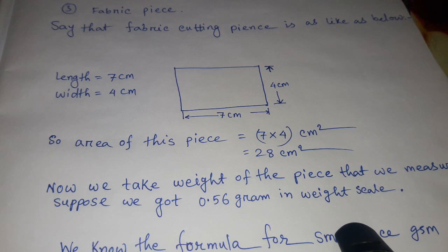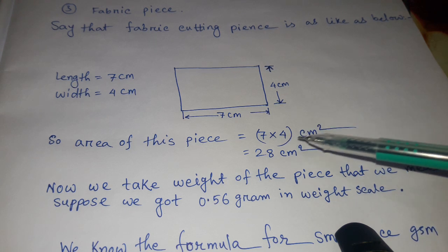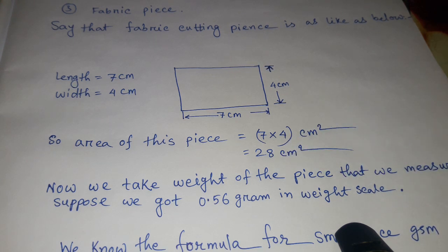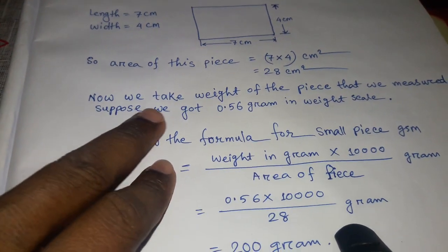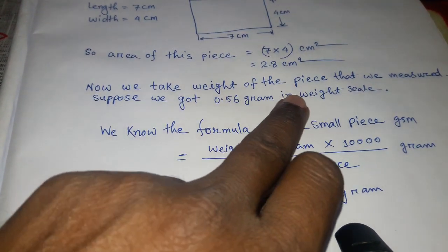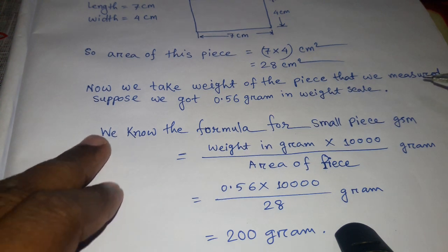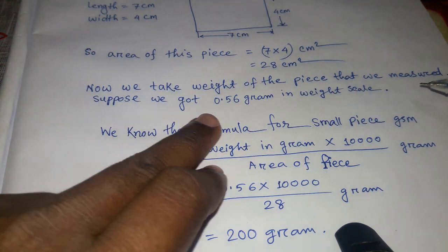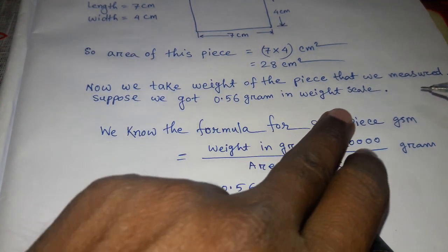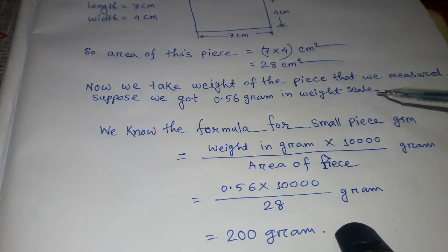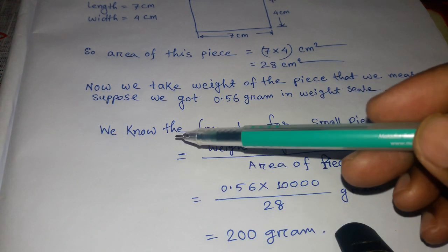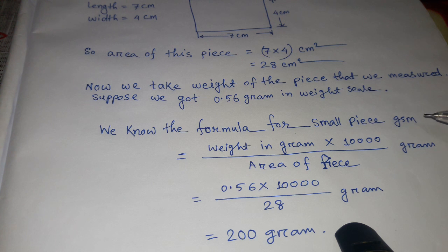Now we take the weight of the piece that we measured. Suppose we got 0.56 grams on the weight scale. We know the formula for small piece GSM: weight in grams × 10,000 divided